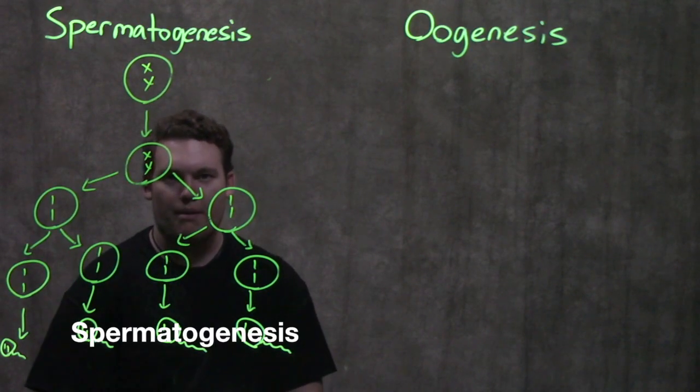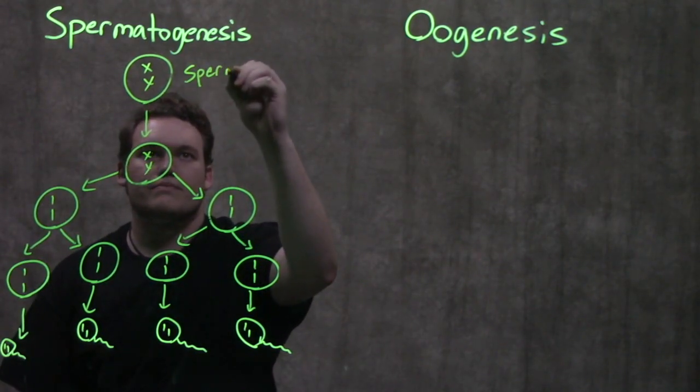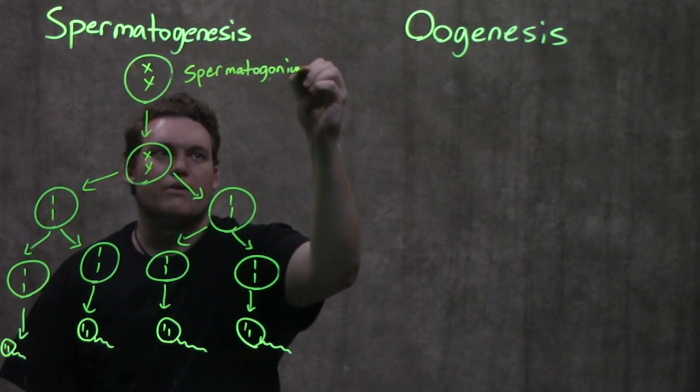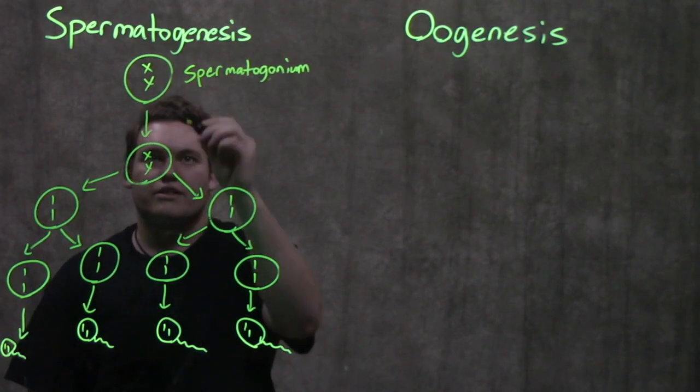So spermatogenesis, happening in males, starts with the spermatogonium. The spermatogonium is just like any of your other cells, right? It's 2N,